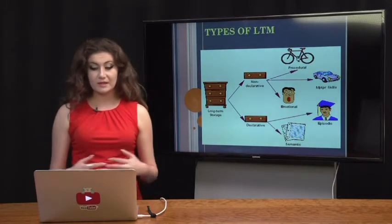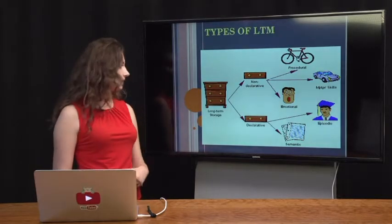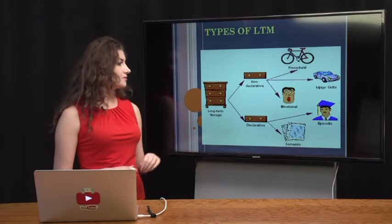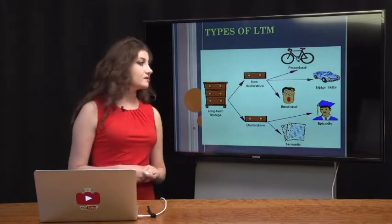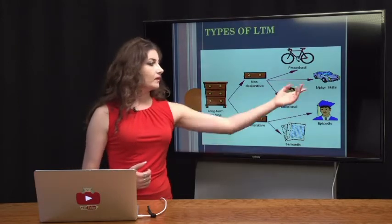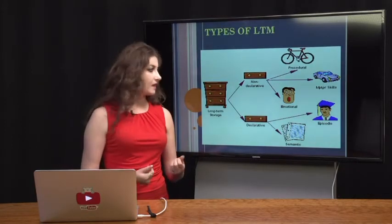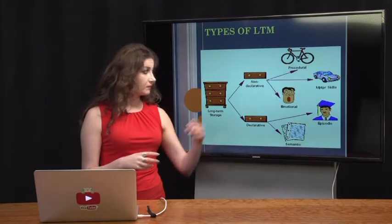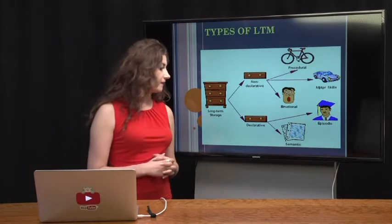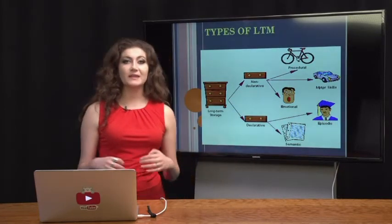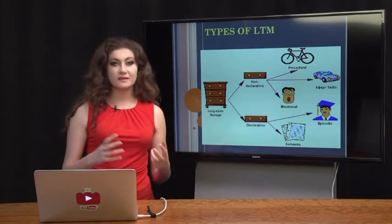Long-term memory is divided into a variety of types. Metaphorically, you can think of it as a giant filing cabinet. Your two top drawers are non-declarative and declarative. Non-declarative includes procedural memory such as riding a bicycle, motor skills like driving or writing, and emotional memory. The declarative drawer is important for episodic memory — things that have happened to you personally — as well as semantic memory, which includes knowledge of dates, names, vocabulary, numbers, concepts, and definitions.